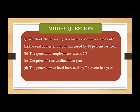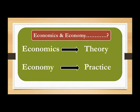Let us solve a question: which of the following is a microeconomic statement? Option A: the real domestic output increased by 10% last year. Option B: the general unemployment rate is 6%. Option C: the price of rice declined last year. Option D: the general price level increased by 7% last year. The right answer is option C. Options A, B, and D are macroeconomic variables. Option C is a microeconomic statement as it considers the price movement of rice only, and not the general price level.